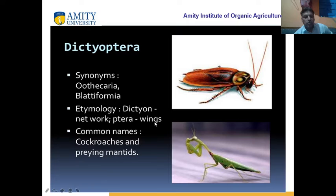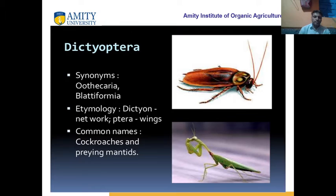So Dictyoptera — the exact meaning of Dictyo is network, network and wing. The four wings which cover the hind wing look like a network. The common two examples are cockroach and praying mantis. Why is it called praying? Because they catch their prey with the help of their four legs.